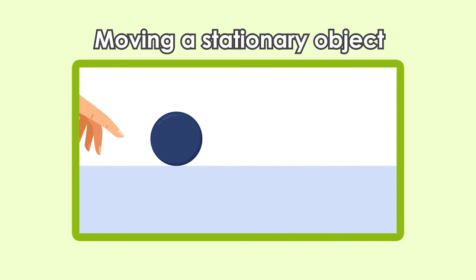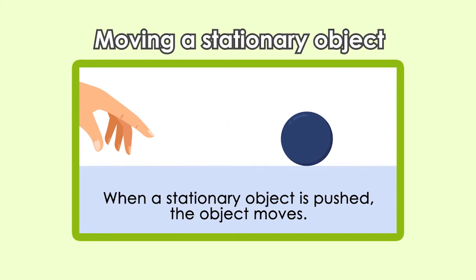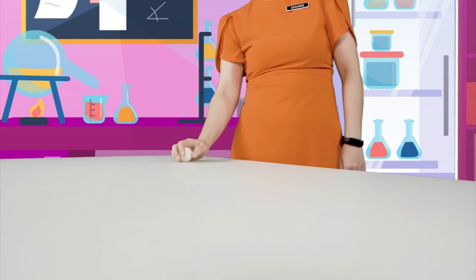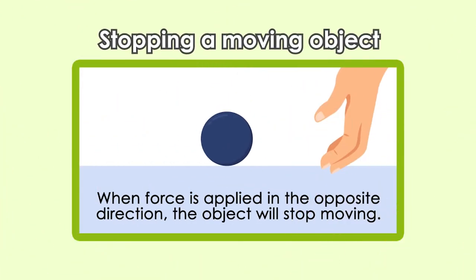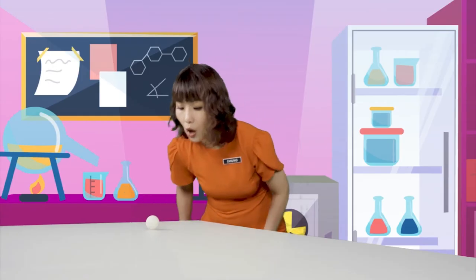As you can see from my action, force can move a stationary object. When a stationary object is pushed, the object moves. When force is applied in the opposite direction, the object will stop moving. So, force can stop a moving object. Force can also change the speed of an object that is in motion, as you can see in this diagram.